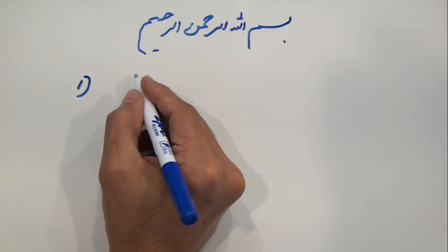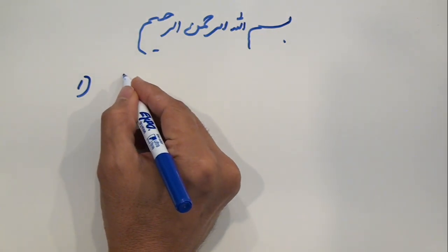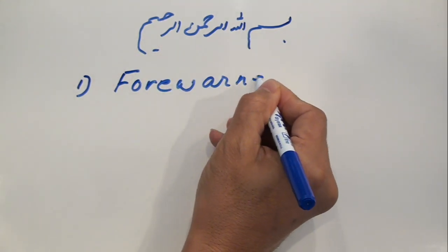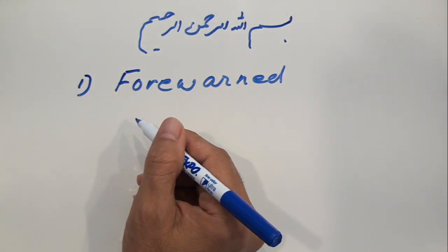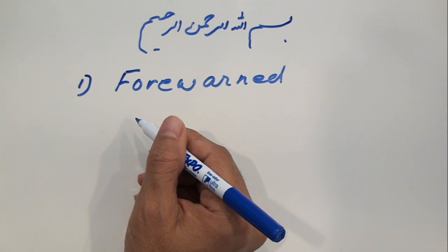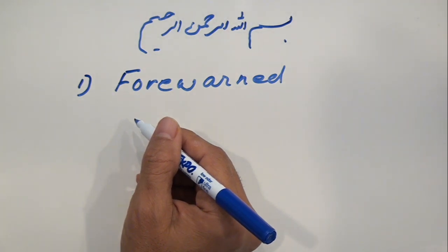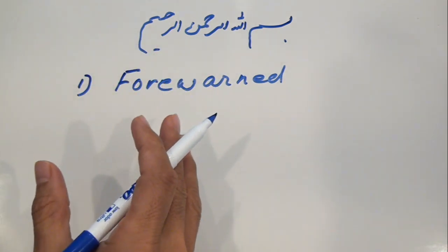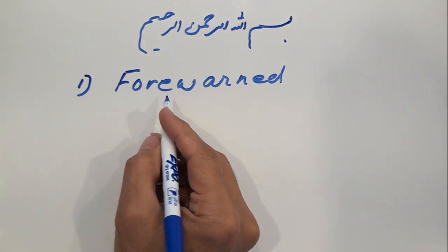Second, we have many proofs that Rasulullah sallallahu alayhi wa alihi wasallam forewarned about the coming usurpation of Khilafah and the pact that the villains of Madinah and the Munafiqeen had made that they are going to take over the affairs of the Muslims when Rasulullah sallallahu alayhi wa alihi wasallam passes on from this world, and specifically Abu Bakr and Omar were involved in those schemes, in those plots.